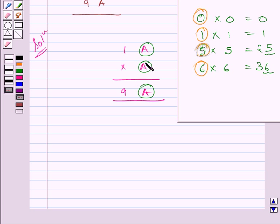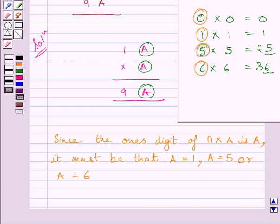We know that the first digit of a number cannot be 0. Here A is the first digit of this number, so the value of A can't be 0. So, possible values of A are 1, 5, and 6.